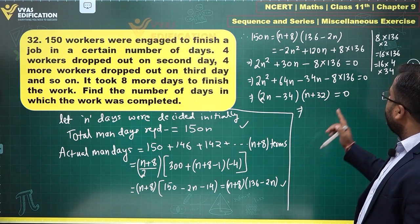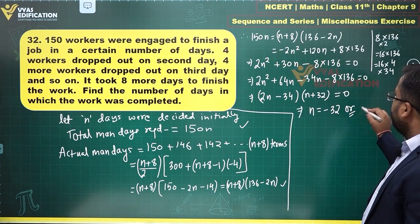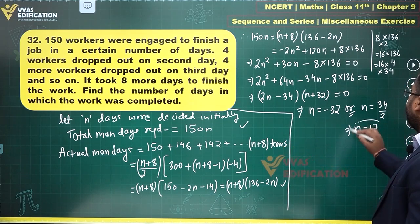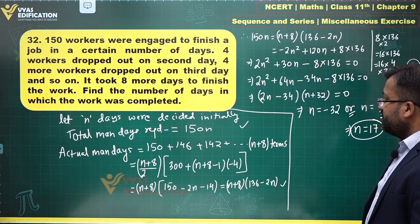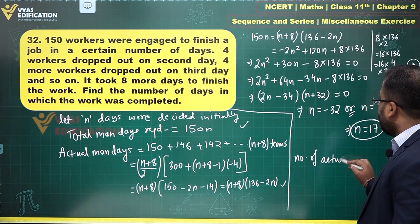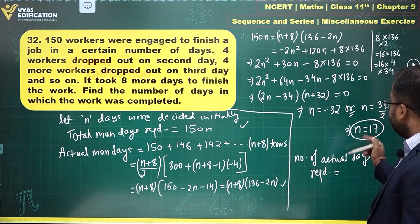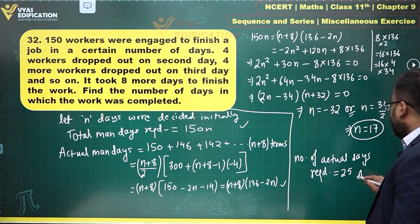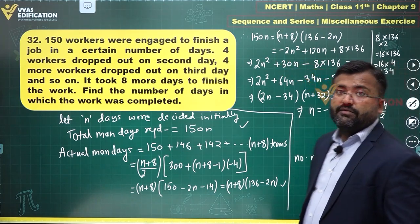That tells me the value of n will be minus 32 or the value of n will be 34 upon 2, which tells me n will be equal to 17. Now, the answer is not n. How many days actually took to solve this, to complete this work? So number of actual days required is equal to n plus 8, which is 17 plus 8, which is 25. That's my answer for this question.